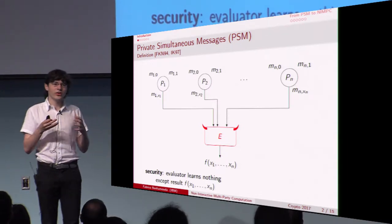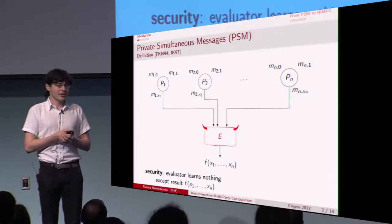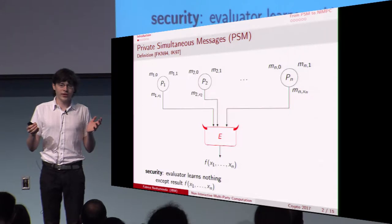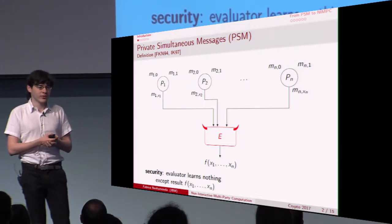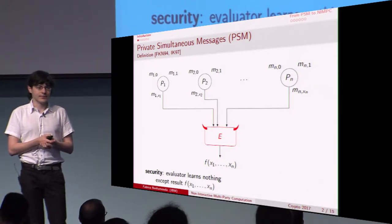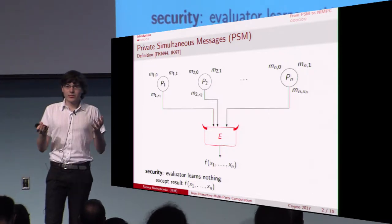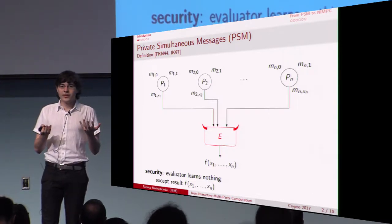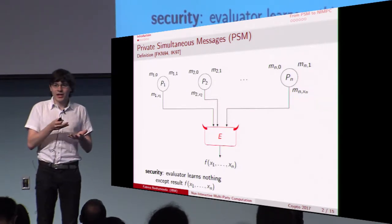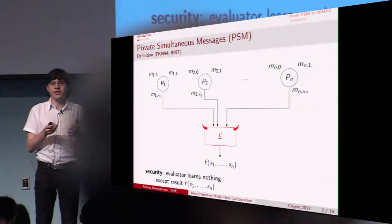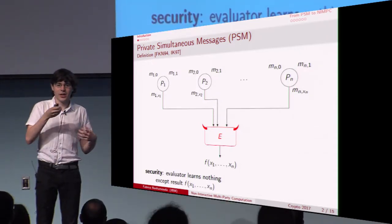We suppose the evaluator is honest but curious. The security we want to achieve is that the evaluator learns nothing except what it is supposed to output — namely the evaluation of the function on x1 through xn. This is an interesting model, but it is somewhat weak because it provides no guarantee if one of the parties pi is colluding with the evaluator, for example by giving its correlated randomness or both its messages mi0 and mi1.